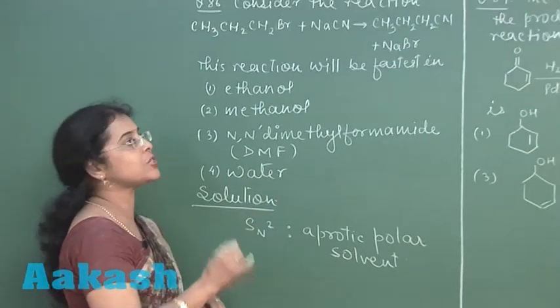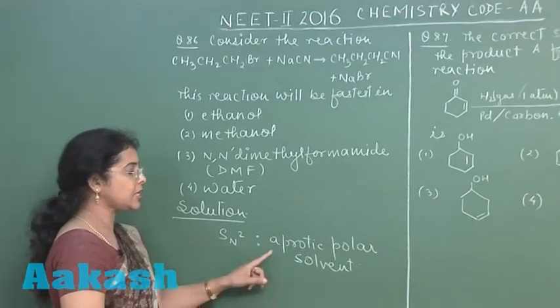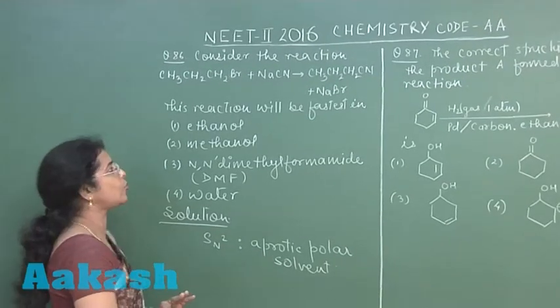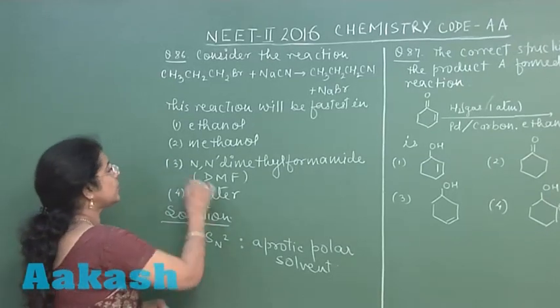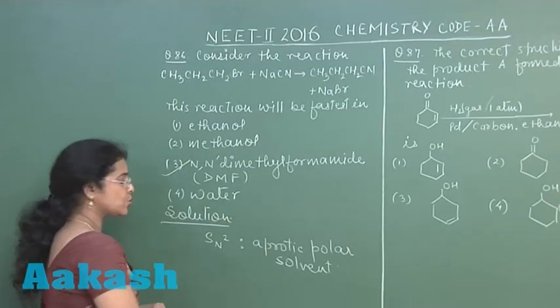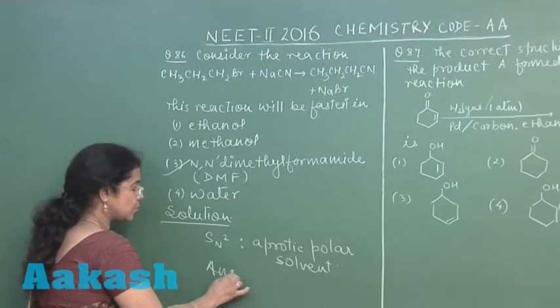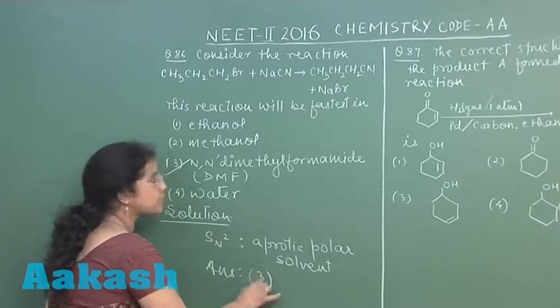reaction will be fastest if we are taking aprotic polar solvent. In the four options given here, the aprotic polar solvent is DMF. So, correct answer of this question should be option 3.